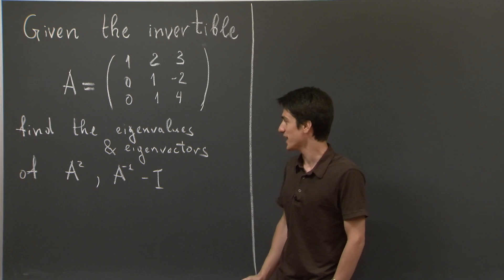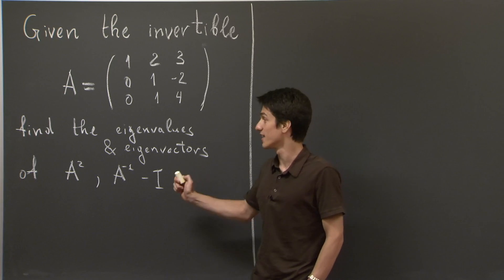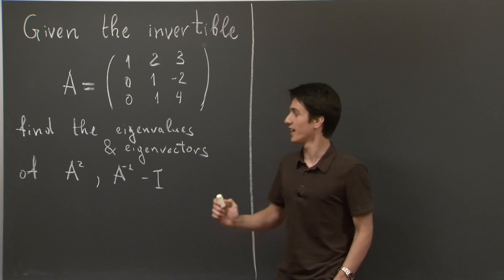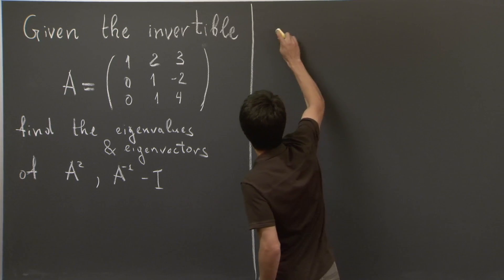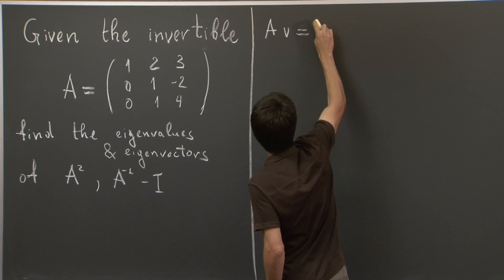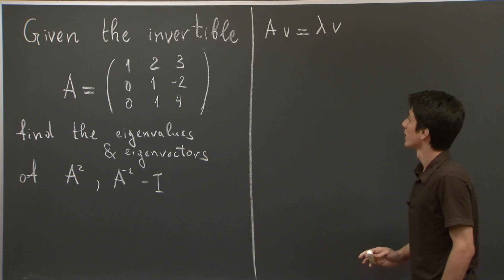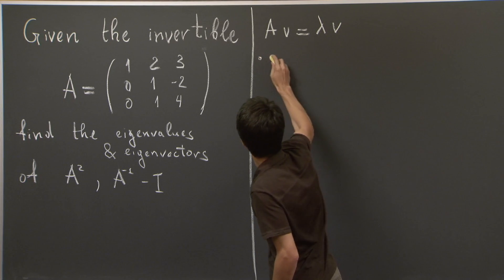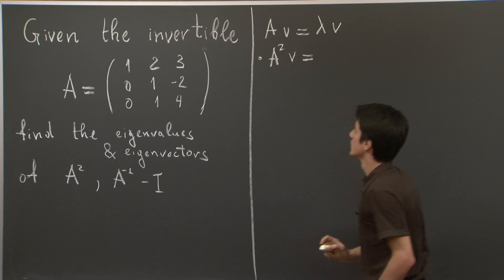Hi again. So the observation that makes our life really easy is the following one. Say V is an eigenvector with associated eigenvalue lambda to A, the matrix A. Then if we hit V with A squared,